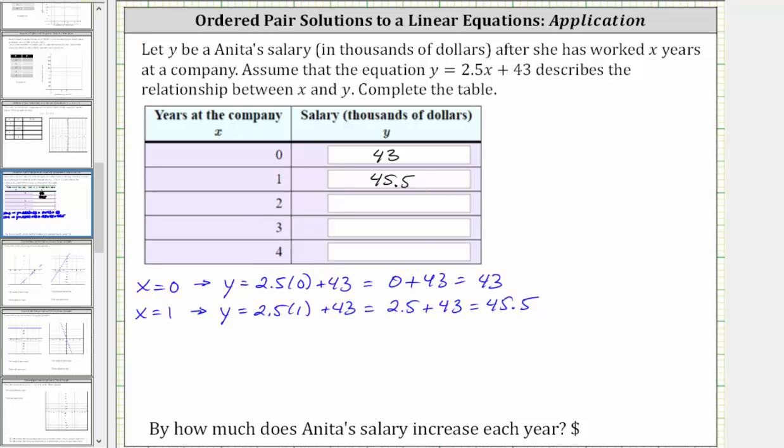In the next row, we are given x equals two. When x equals two, the corresponding y value is 2.5 times two plus 43. 2.5 times two is five. Five plus 43 equals 48. When x is two, y equals 48.